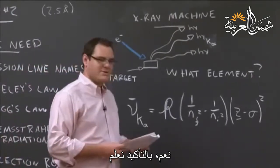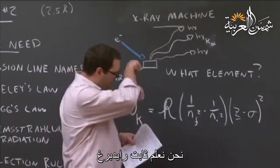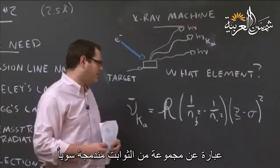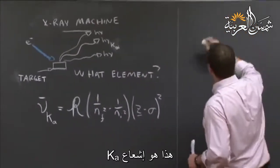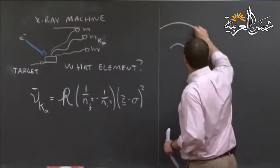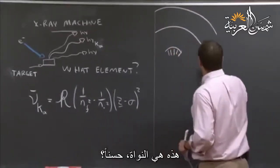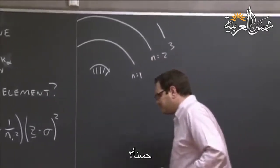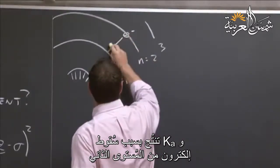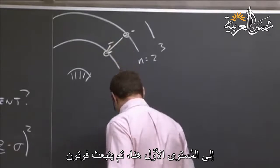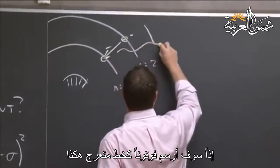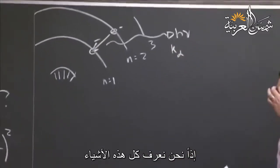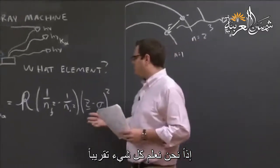In order to solve this problem, we want to know what element — we're looking for Z. And we know everything else. K-alpha corresponds to an electron dropping from N=2 to N=1, giving off a photon — that's our K-alpha radiation. So we know our wave number. But what is sigma?